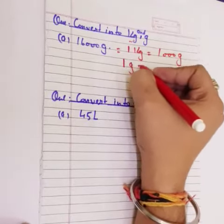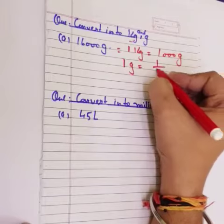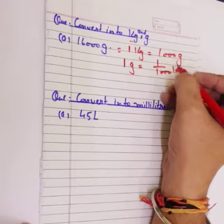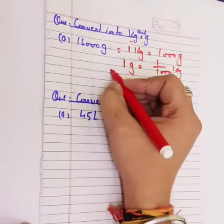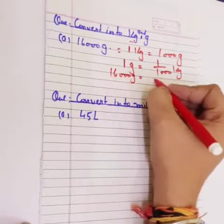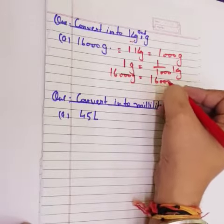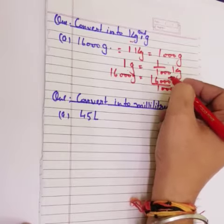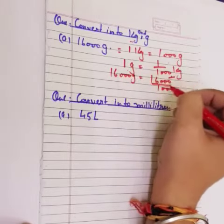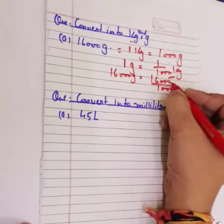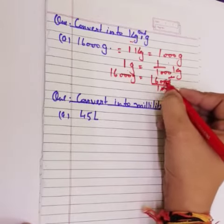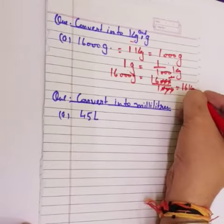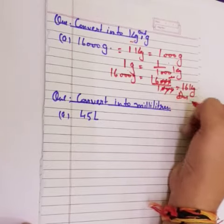1 Gram is equal to 1 upon 1000 KG. Gram दे रखाई आपका 16,000 Gram. 16,000 में divide देंगे 1000 का. 16,000 में divide देंगे 1000 का. 0 से 0 का, 0 से 0 का, 0 से 0 का, 1 का 16 में divide देंगे 16 time जाएगा. यानी की answer आ गया 16 KG answer. Clear?